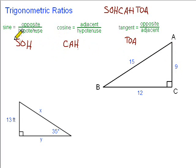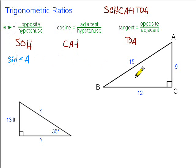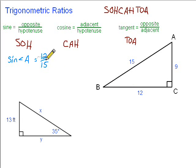If we're working with angle A and want to find the sine of angle A, sine is the opposite over the hypotenuse. So the opposite is 12 and the hypotenuse is 15 — so 12 over 15. We can simplify that by dividing top and bottom by 3 to get 4 over 5.